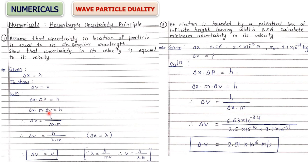So Δx · m · Δv = h, giving Δv = h / (Δx · m). Since Δx = λ, substitute to get Δv = h / (λm). But from de Broglie: λ = h/(mv), so h/(λm) = v. Therefore Δv = v, which is what we needed to show.